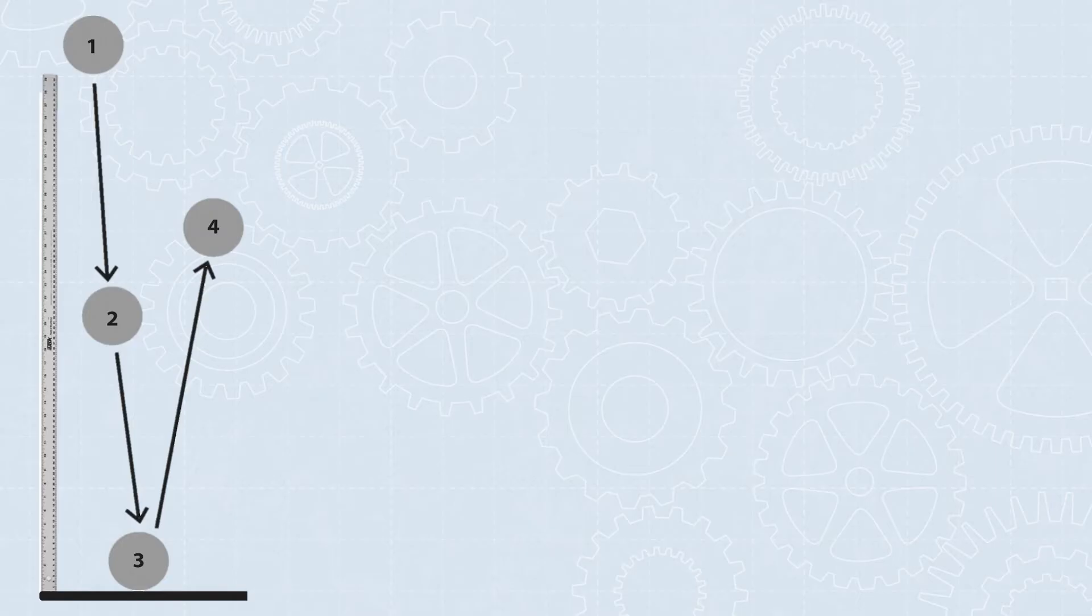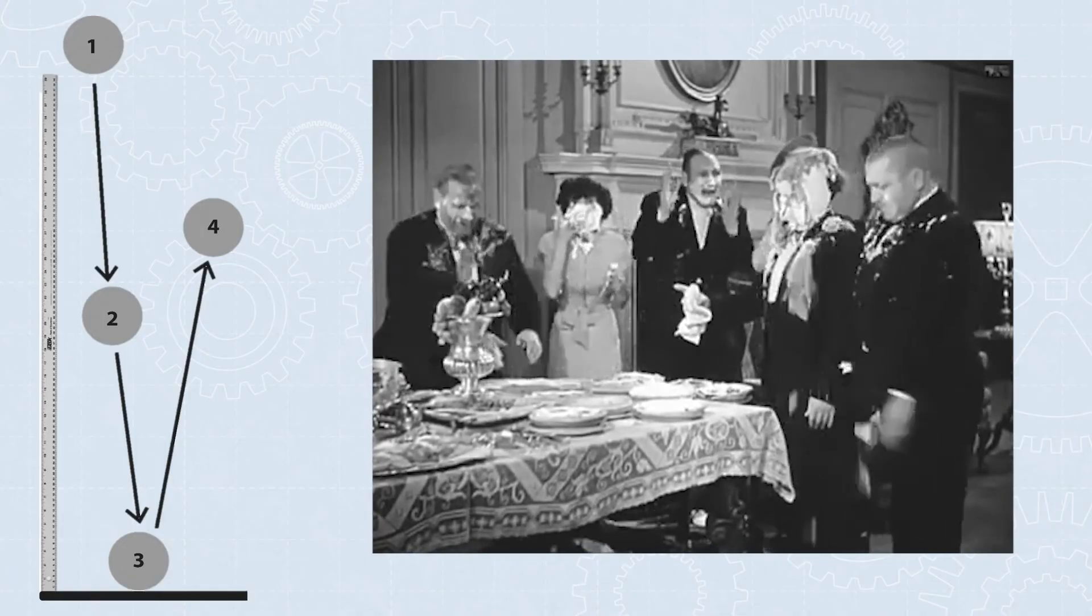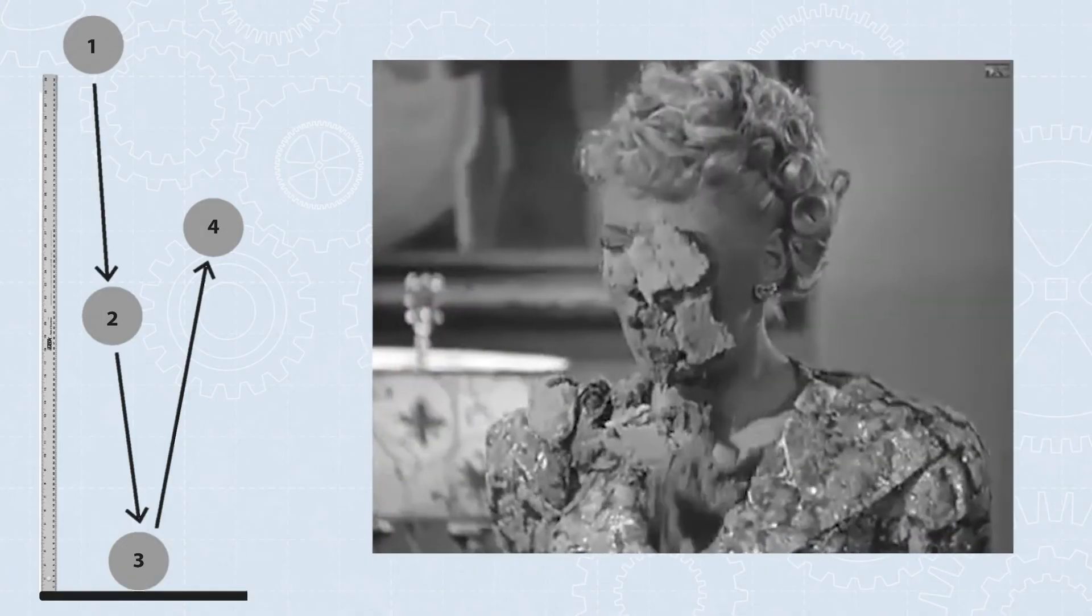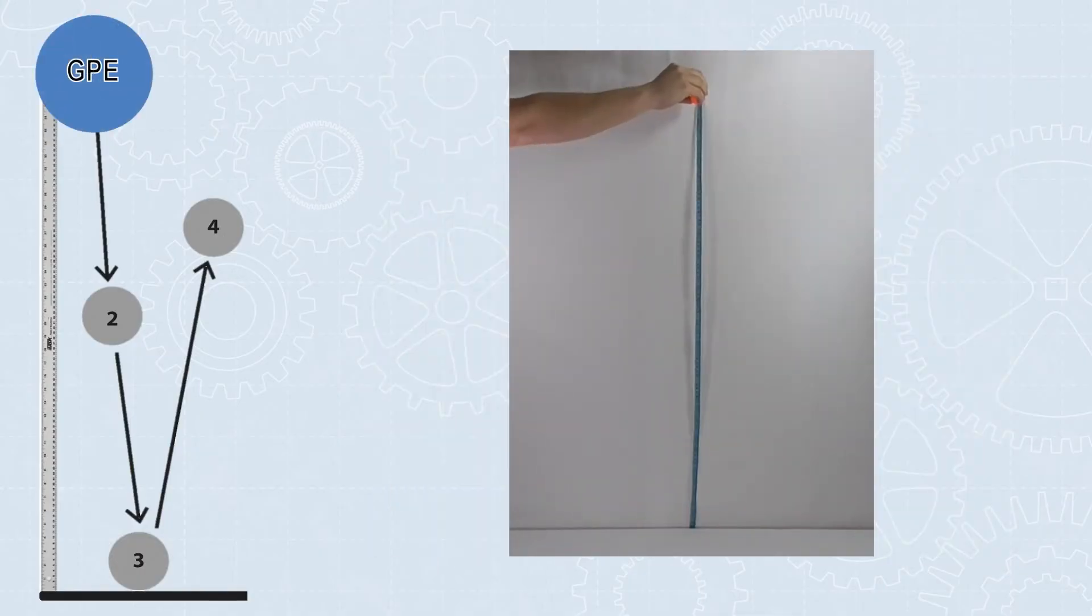To help make sense of this transformation of energy, let's use something visual, like a pie chart. These pie charts can show us not only what forms of energy are present, but the relative amounts. At position 1, the super ball's being held off the ground. It's not moving, it's just off the ground. So all of its energy is being stored as gravitational potential energy.